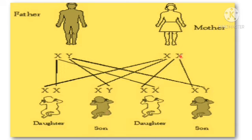If this X chromosome comes from the mother and this X chromosome comes from the father, we get a female child. If this X chromosome comes from the mother and the Y chromosome comes from the father, we get a male child.